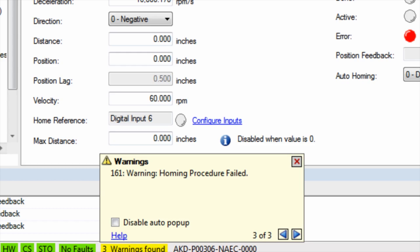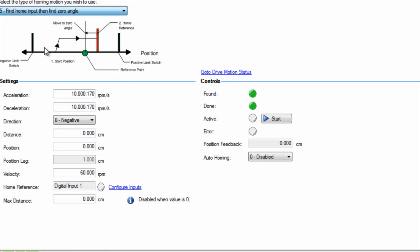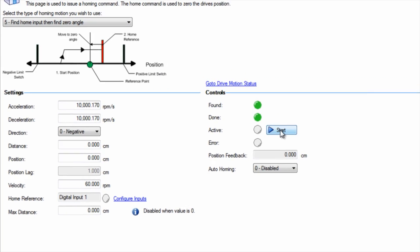Since the home switch can have an inaccuracy or a low repeatability, home types 5 and 6 allow the addition of the more accurate and highly repeatable zero angle or index mark.